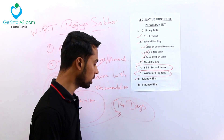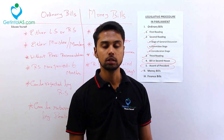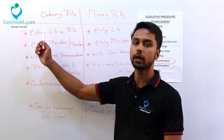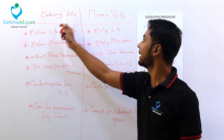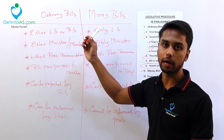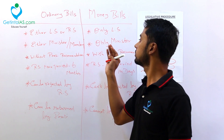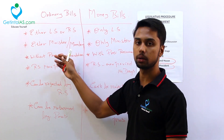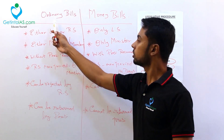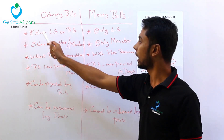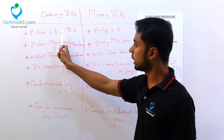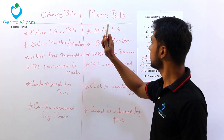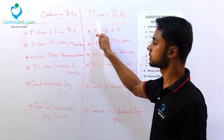Next we will see the difference between an ordinary bill and a money bill. Your ordinary bill can be introduced either in Lok Sabha or Rajya Sabha. But your money bill can only be introduced in Lok Sabha.